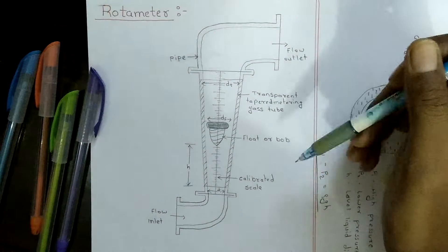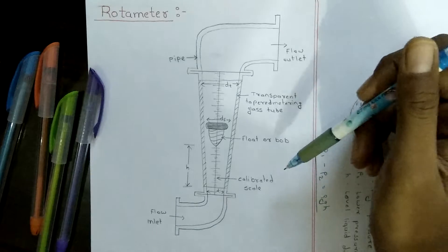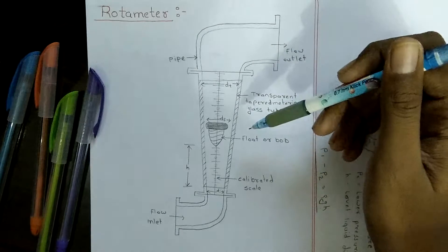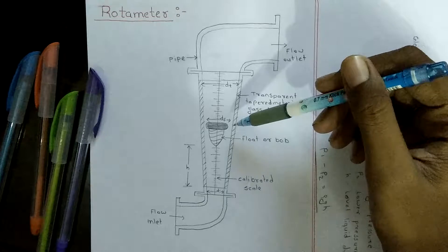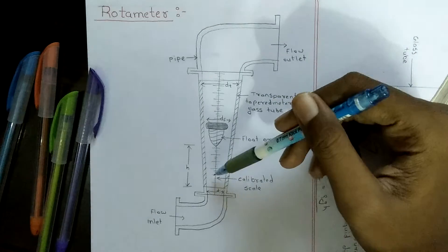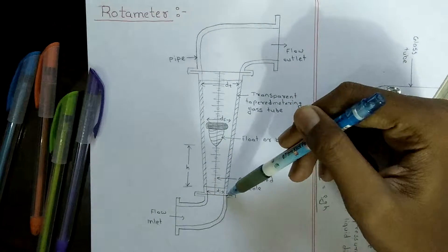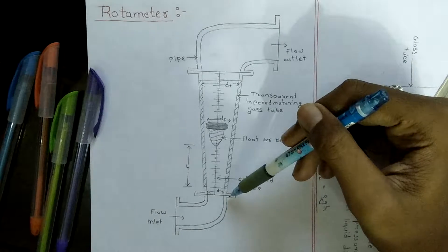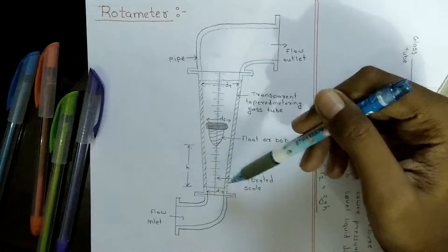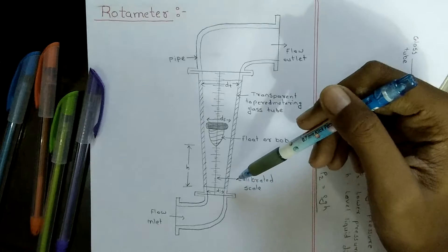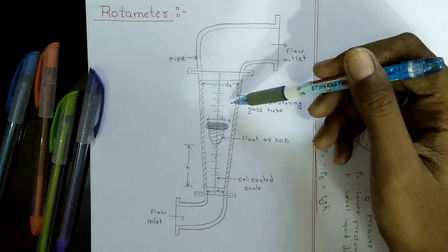First of all, it consists of a tapered transparent glass tube with small diameter at bottom, that is Ti, which is mounted vertically, and at the top it is bigger, that is TF.